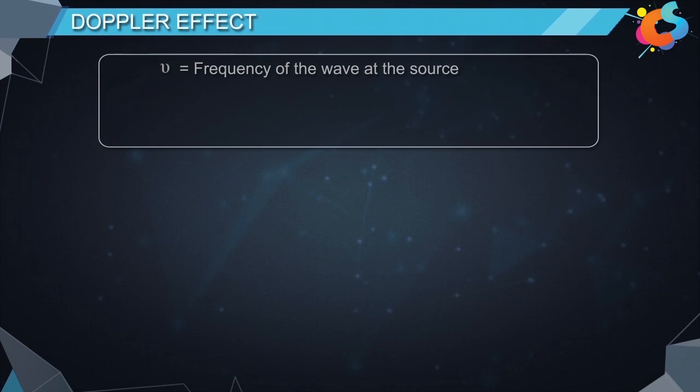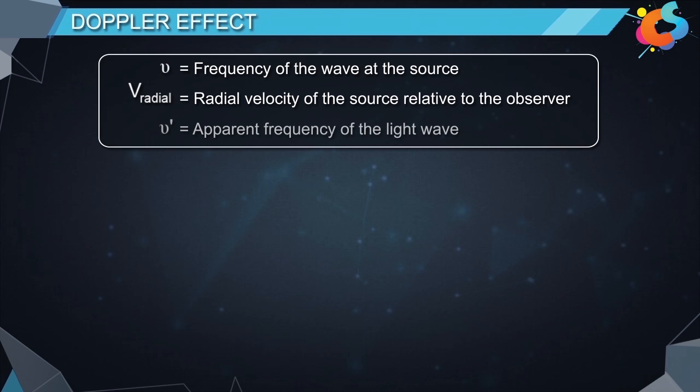If ν is the frequency of the wave at the source, v_radial is the radial velocity of the source relative to the observer along the line joining the source to the observer, then the apparent frequency of the light wave ν' is given by (ν' - ν)/ν = -v_radial/c.